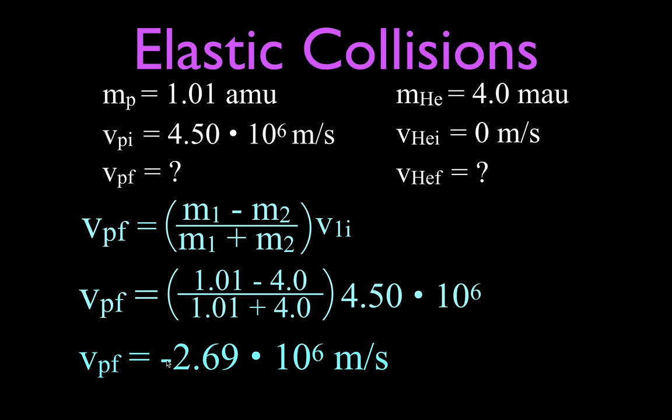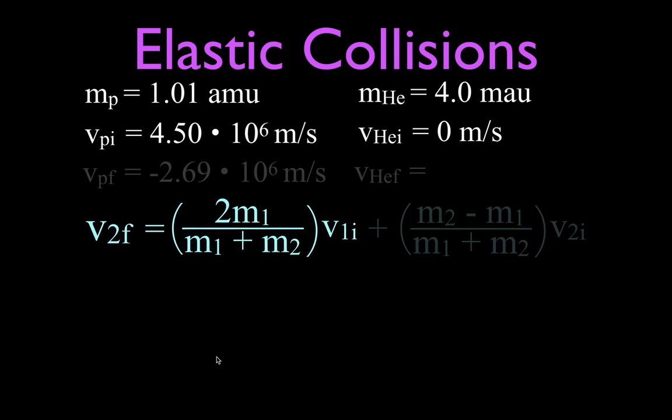So this is the direction of the motion in the other opposite direction, because that initial velocity was positive, now it's negative going back in the other direction. And this is its speed. Okay, so that is for the proton velocity.